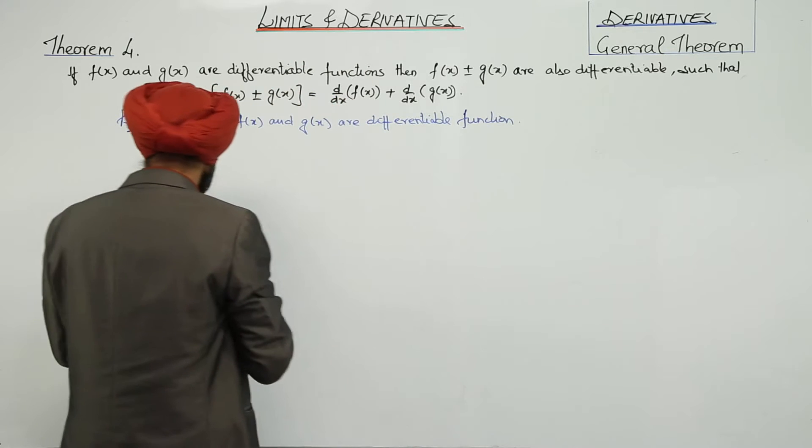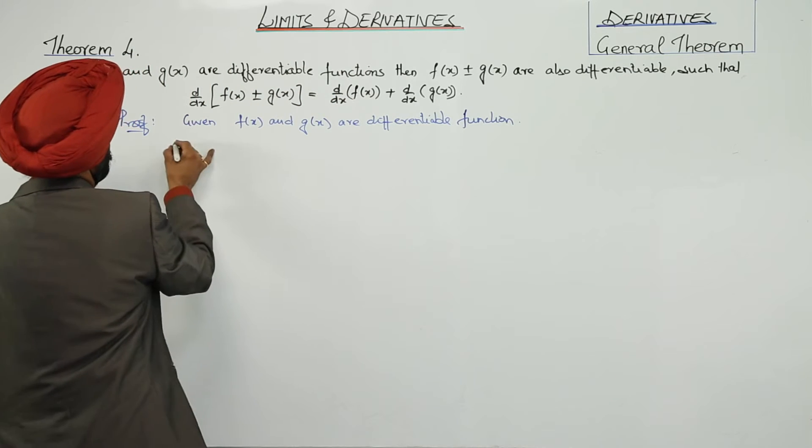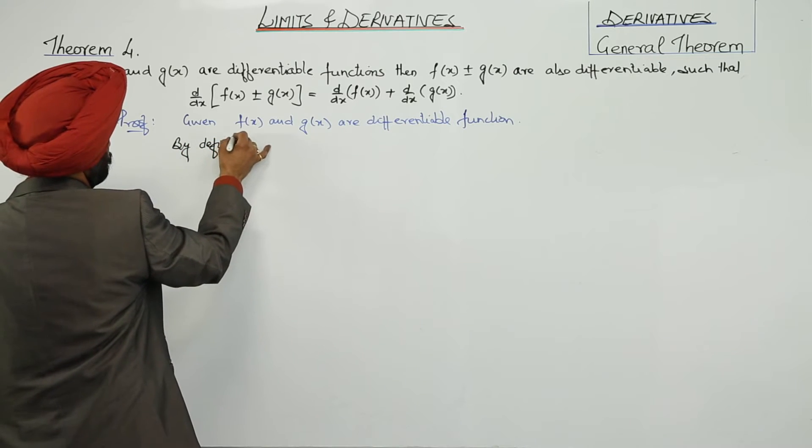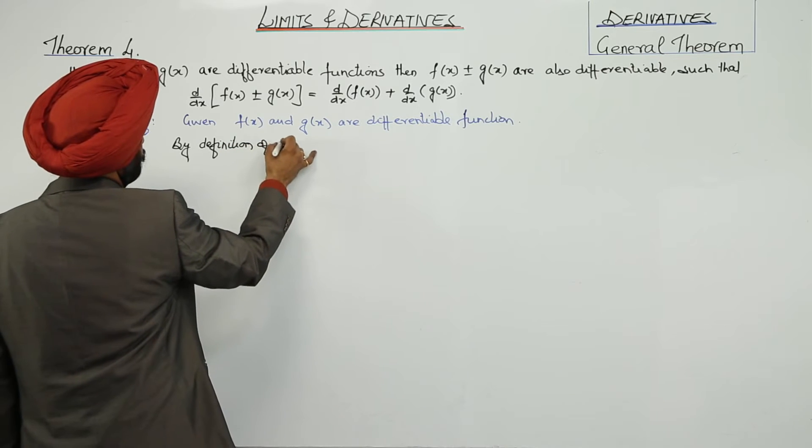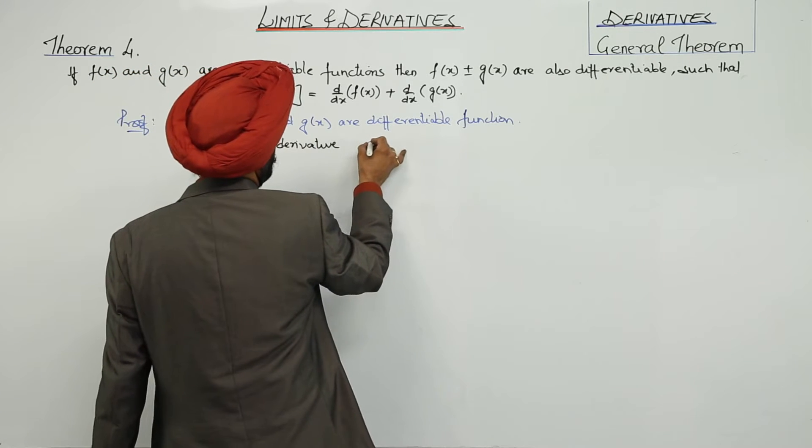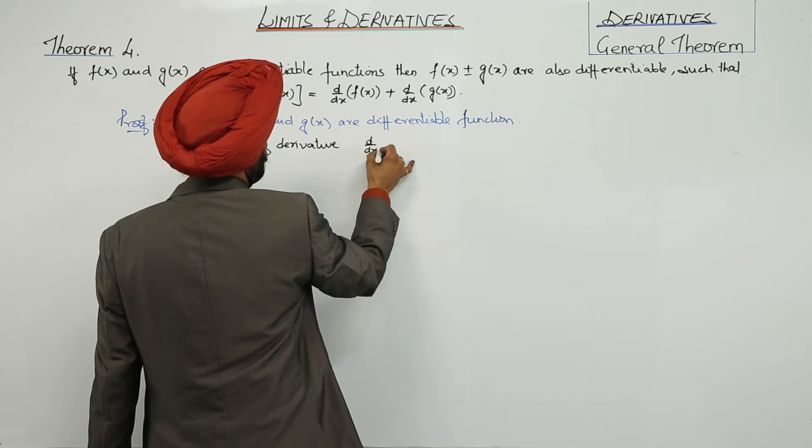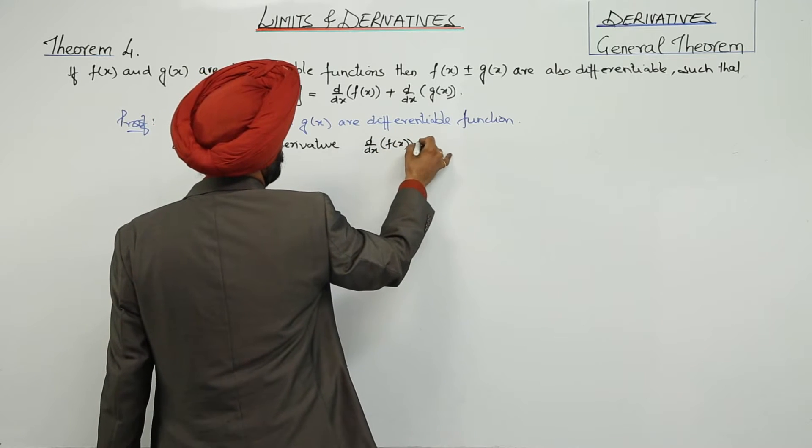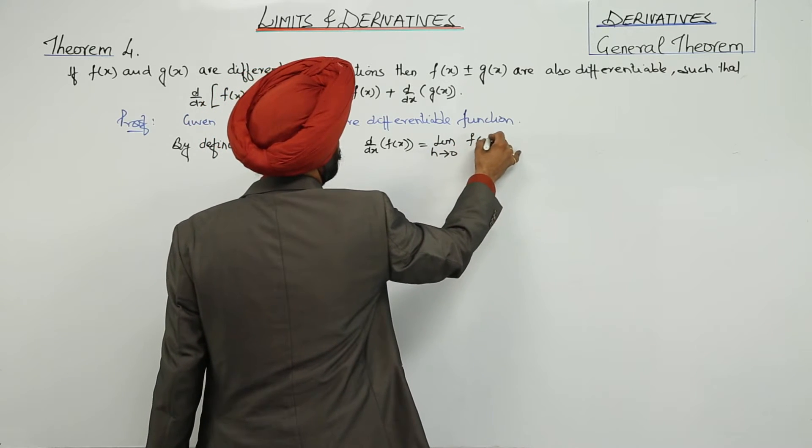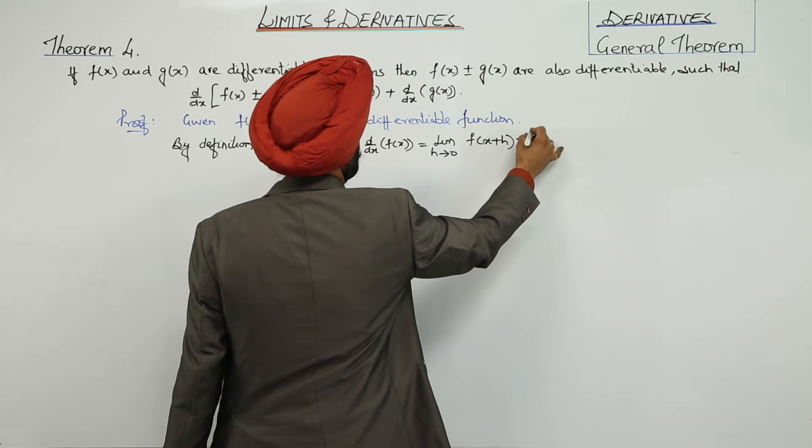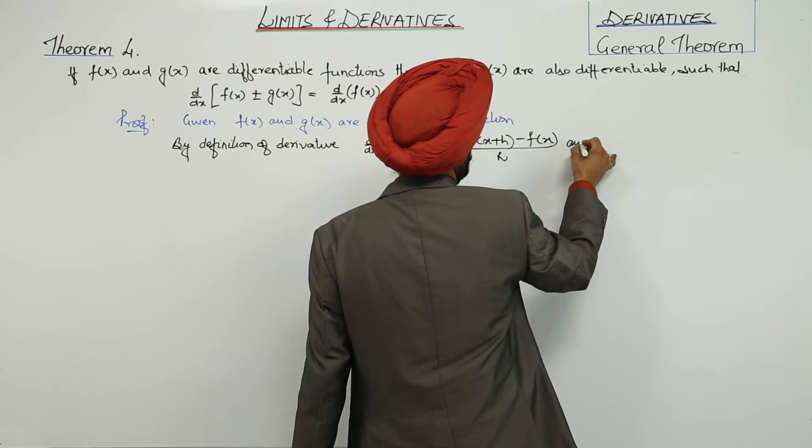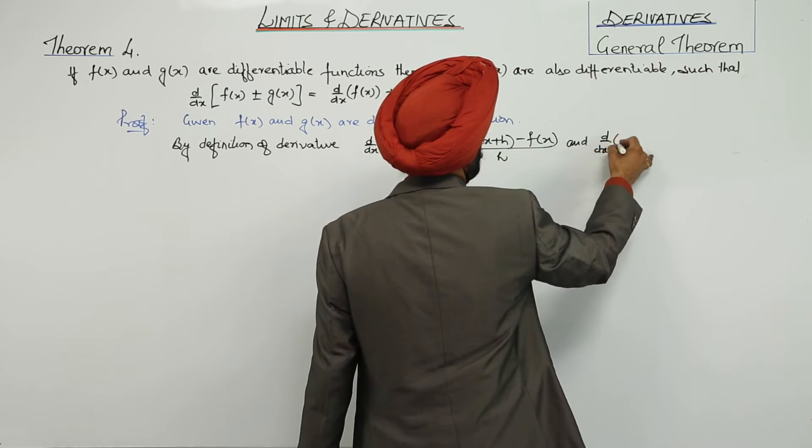By definition of derivative, d/dx of f(x) equals the limit as h approaches 0 of [f(x+h) - f(x)]/h.